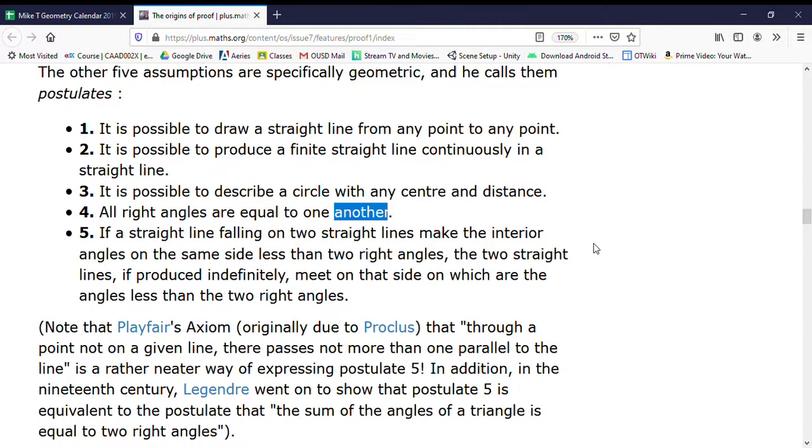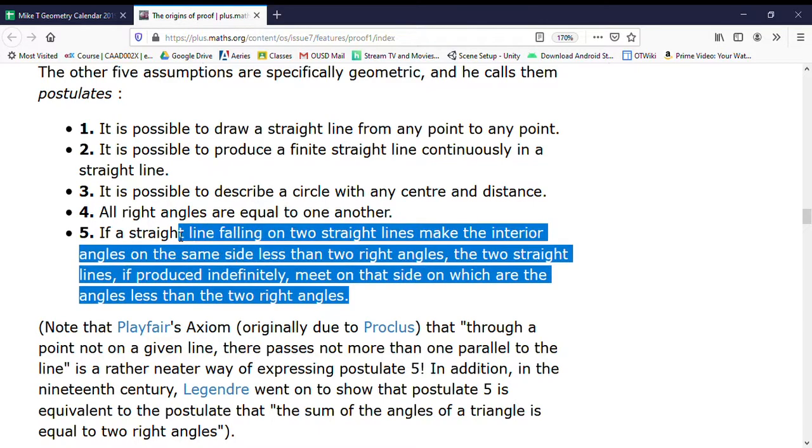At some point, so his basic idea is if I have a transversal that is at right angles to two lines, they're parallel. And specifically, this one actually says if they're not right angles, they will eventually meet on one side.